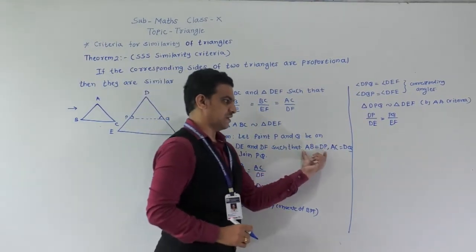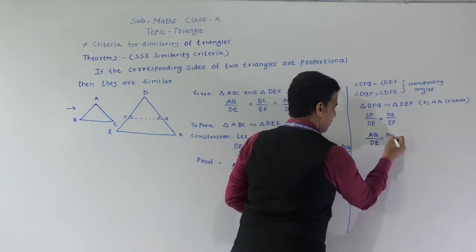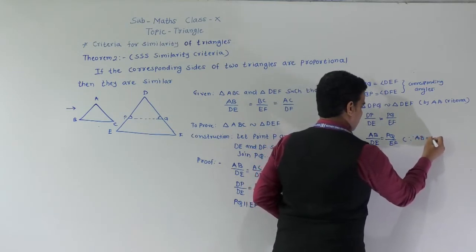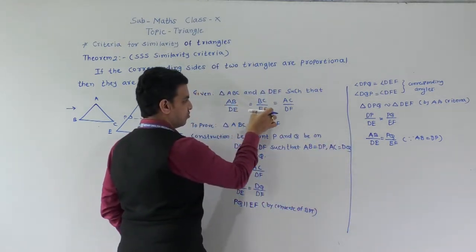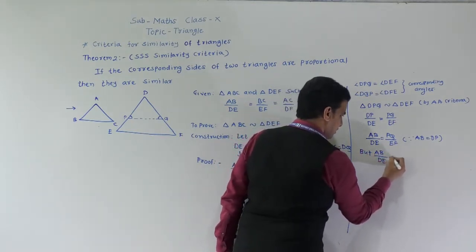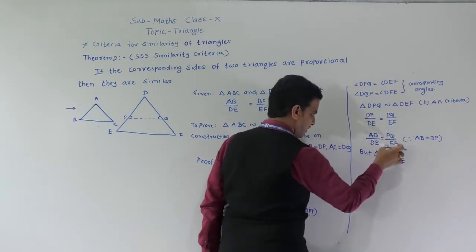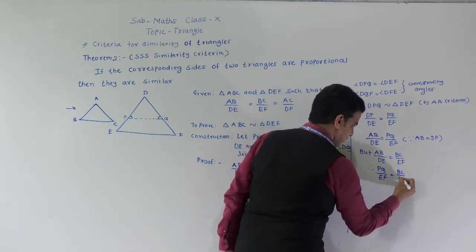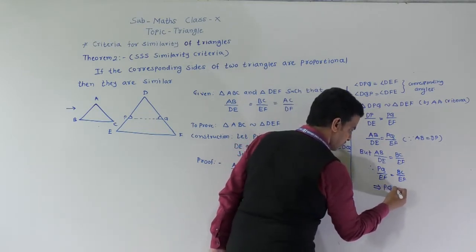Since DP equals AB by construction, we write AB by DE is equal to PQ by EF. From the given, AB by DE is equal to BC by EF. And from the similarity result, AB by DE is equal to PQ by EF. Therefore, PQ is equal to BC.